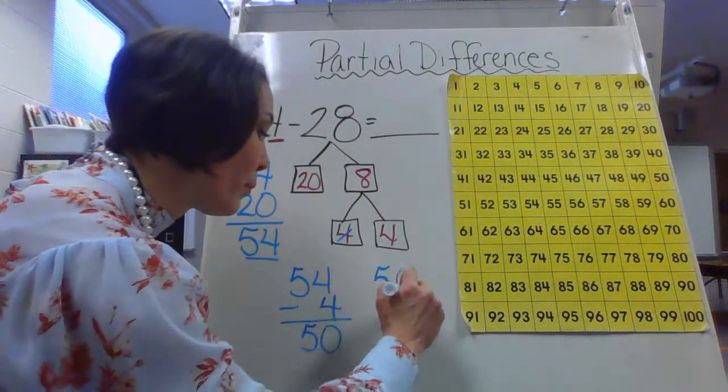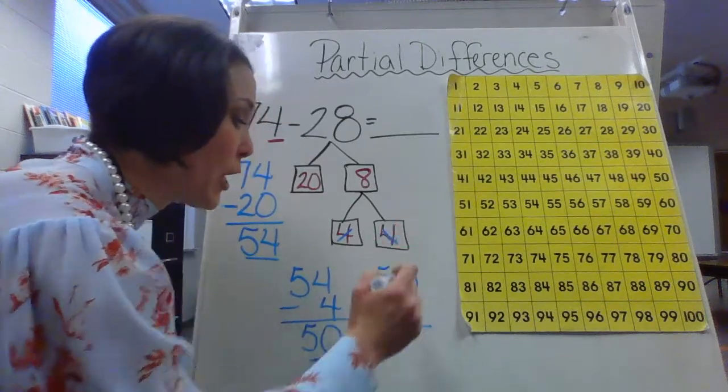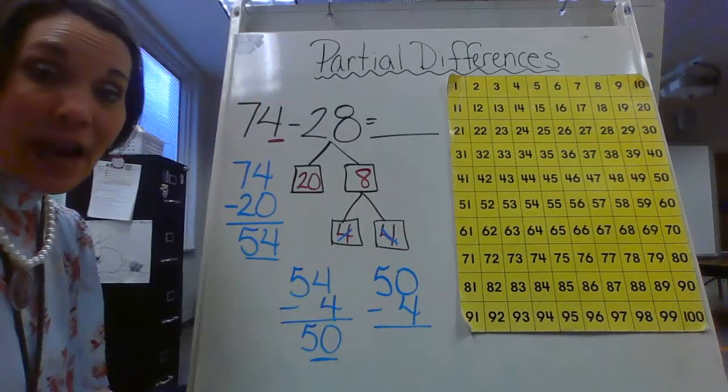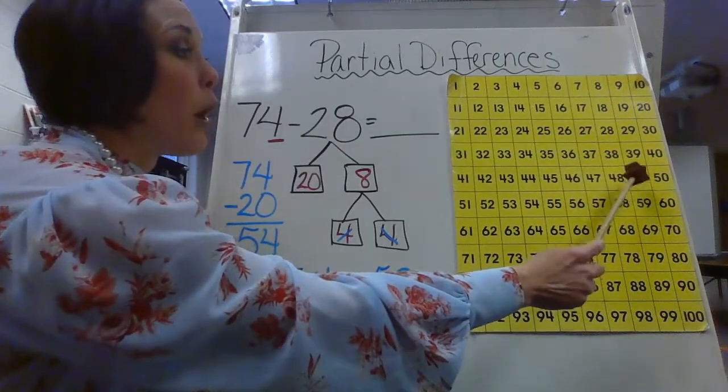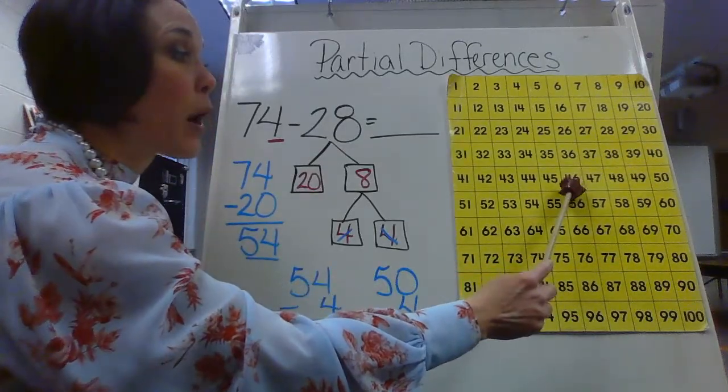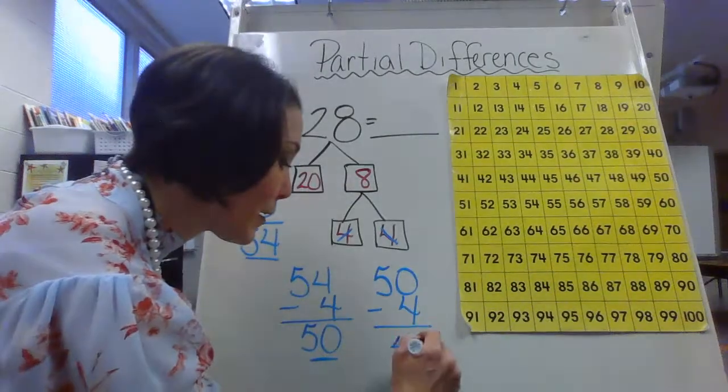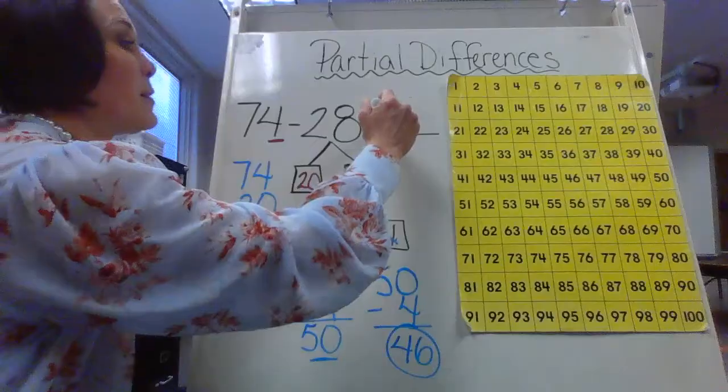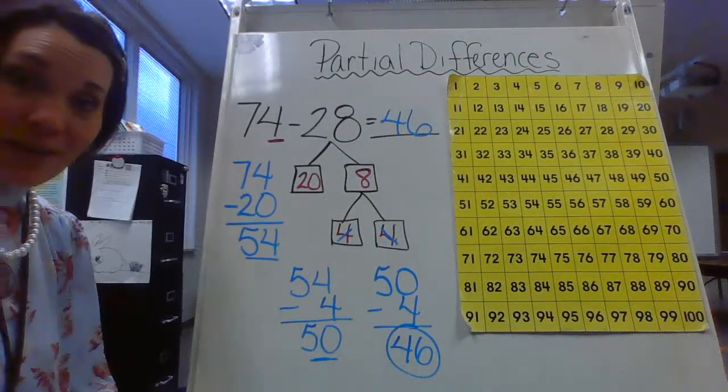And now 50 minus my last four here. So I could easily count that back or I could use my chart as a helper. One, two, three, four. I'm ending on 46. That is what's going to be my final difference there.